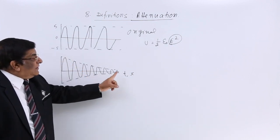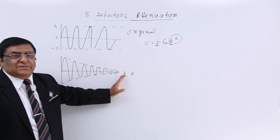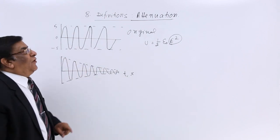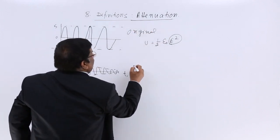So what is this phenomenon that with distance, the strength of the signal becomes weak? This phenomenon is known as attenuation.